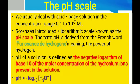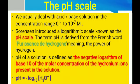We usually deal with acid-base solutions in the concentration range 0.1 to 10⁻⁷ M. Sorensen introduced a logarithmic scale known as the pH scale. The term pH is derived from the French word meaning 'power of hydrogen.' The pH of a solution is defined as the negative logarithm to base 10 of the molar concentration of hydronium ions present in the solution. So pH = −log₁₀[H₃O⁺].